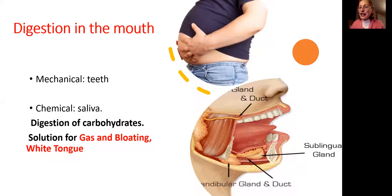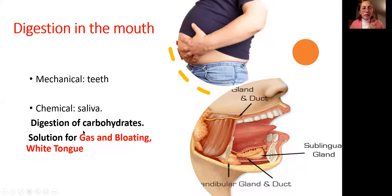Let's continue our education on the topic of the digestive tract. Today's topic is digestion in the mouth — specifically, digestion of carbohydrates. We'll be talking about mechanical digestion by means of teeth and chemical digestion by saliva. If you do not break carbohydrates in your mouth, you will create a problem, and the problem will be gas and bloating.